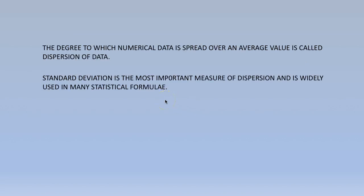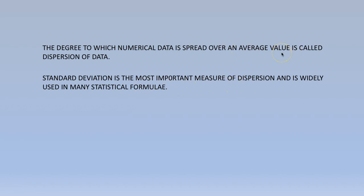Now, what is standard deviation? The degree to which numerical data is spread over an average value is called dispersion of data. Standard deviation is the most important measure of dispersion. If we have an average and the values are spread around the average, that is called dispersion, and it is denoted by the symbol sigma.